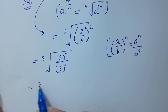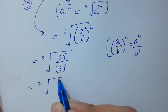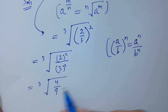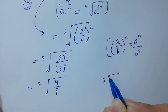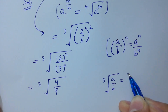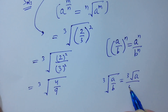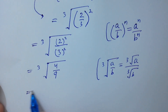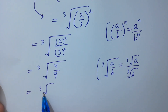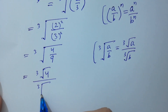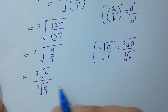Cube root of 2 squared is cube root of 4, and 3 squared is 9. Since cube root of a over b equals cube root a over cube root b, we have cube root 4 over cube root 9.